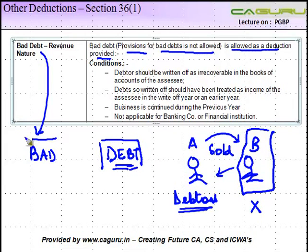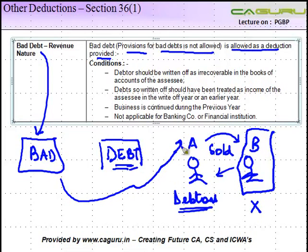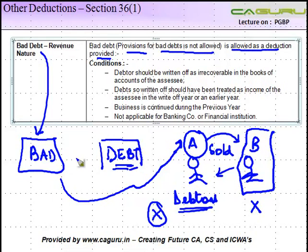So while this is a debt, it has in some respect become bad for A, because he's not able to get it back. What happens is that these debts are then, after some point in time, written off by A in his books of accounts, and this is known as bad debts — a debt which was due, which was receivable, but it became bad.